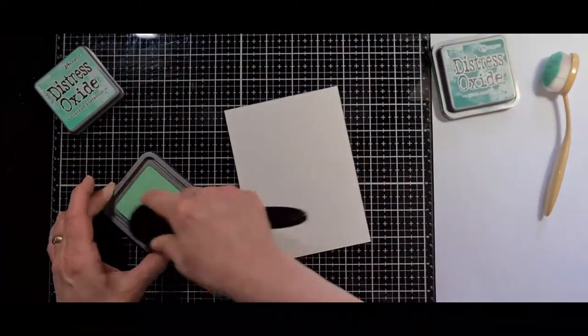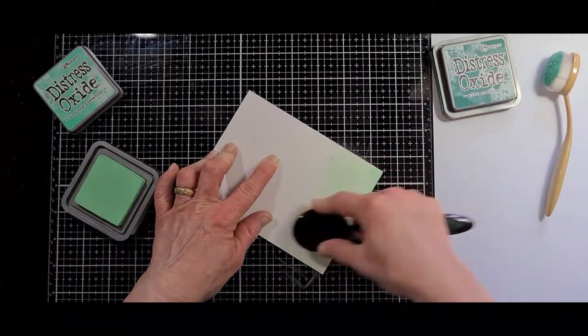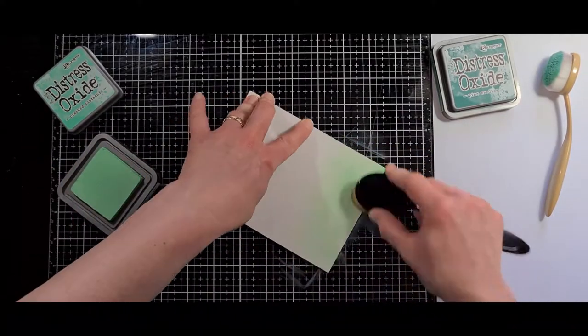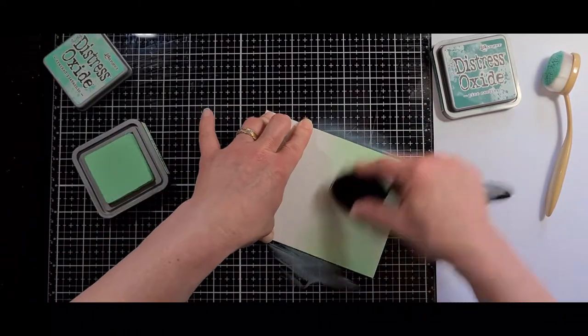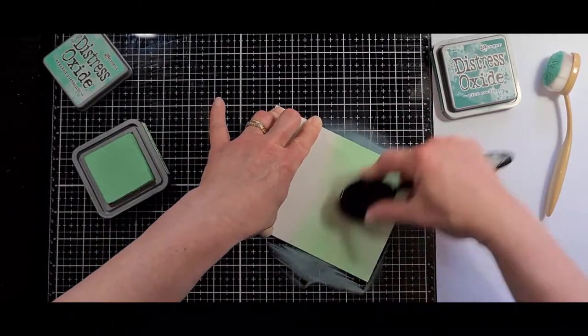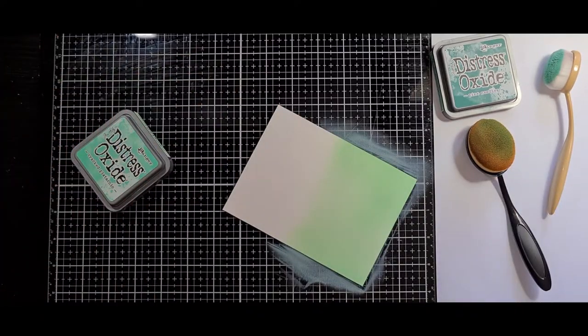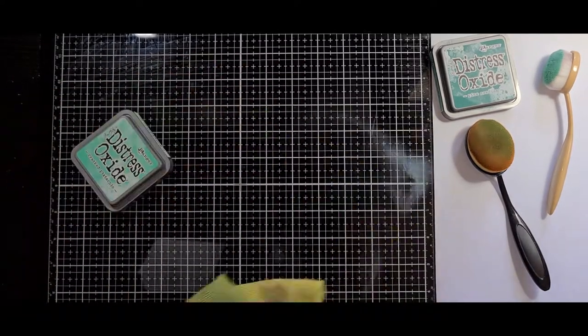So to start off my card, I cut down three pieces of cardstock to 4.5 by 5.75 inches. They are a little bit bigger than my finished card size, but in the end I will just cut them down to the appropriate size and they will be perfect.